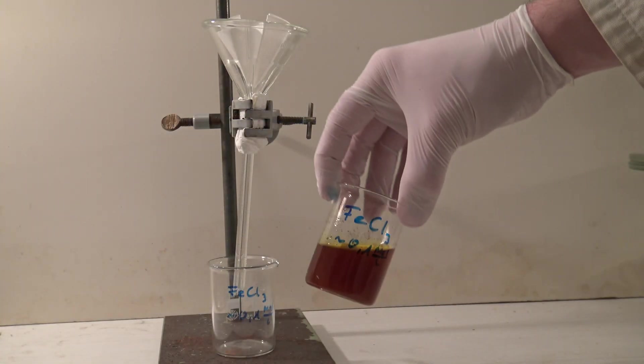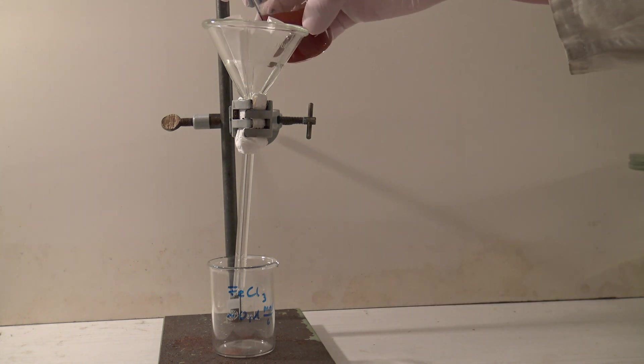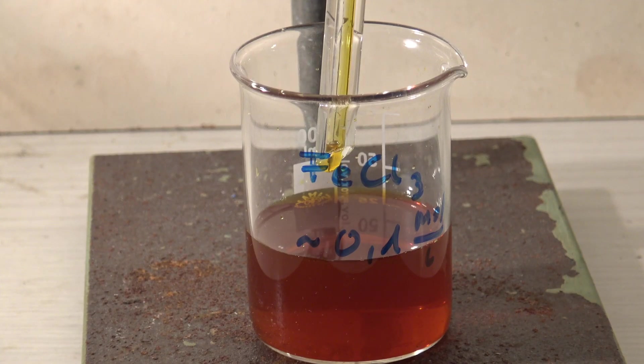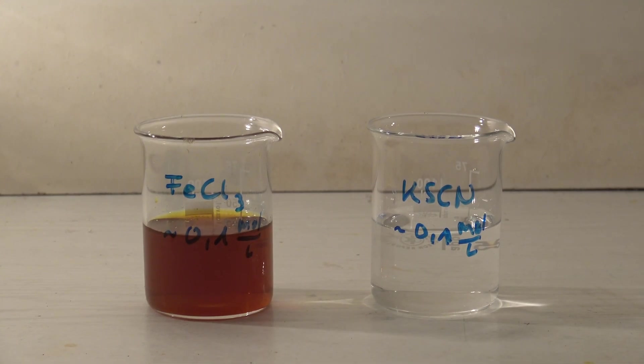The iron chloride had insoluble impurities so it was filtered. The filtrate did look more clear in reality but iron(III) chloride also tends to slowly hydrolyze. For the experiment this solution is sufficient.